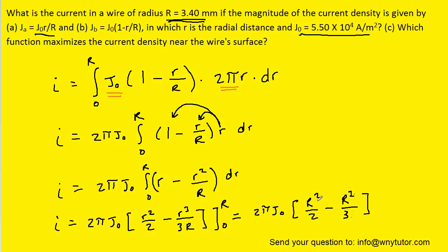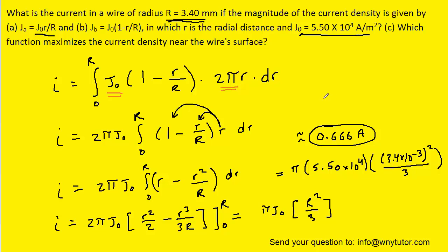We could then combine these like terms. We could reduce a little bit by dividing numerator and denominator by 2. And then finally we can plug in the known values for J0 and capital R. And when we simplify that we get a value of the current of approximately 0.666 amps. And that is the correct answer to part B.